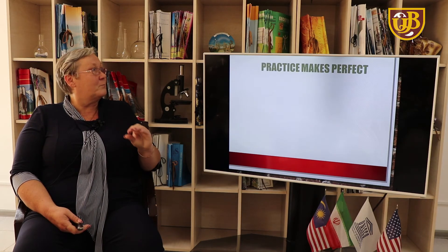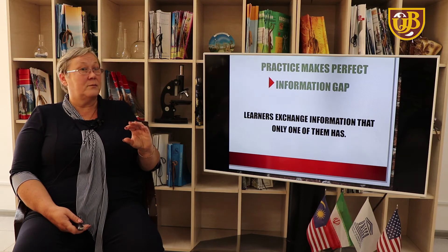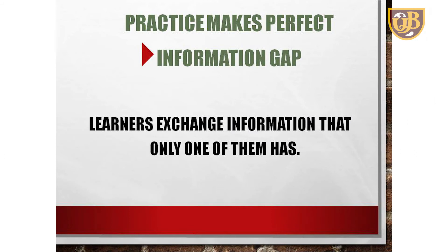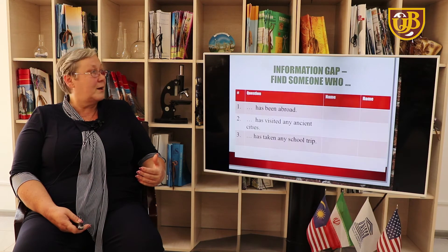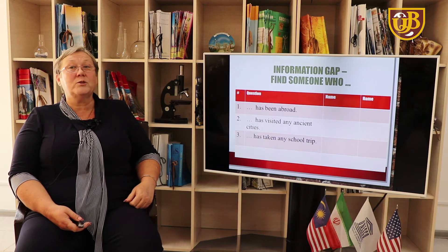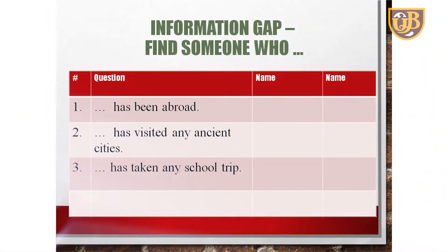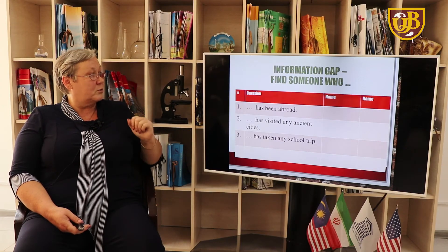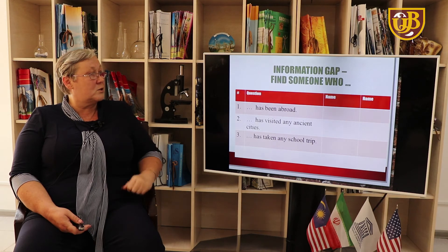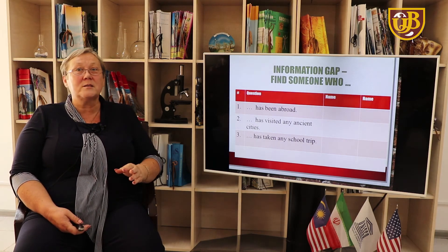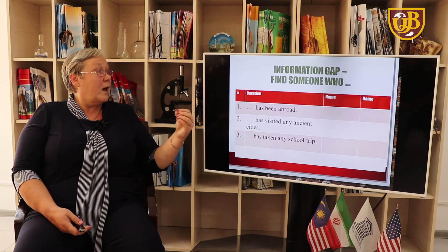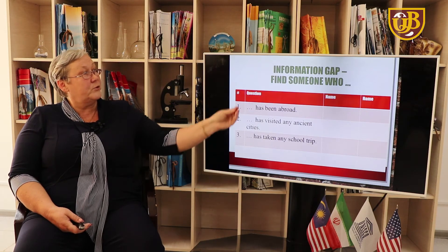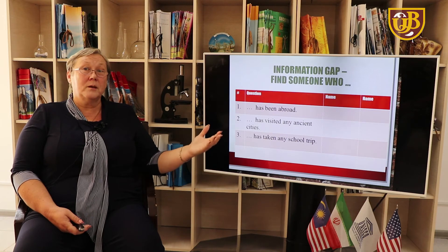Now let's discuss some of them. Practice makes perfect — to achieve goals and to have good results, you need to practice a lot. Information gap activity: learners exchange information that only one of them has. 'Find someone who' is a commonly used activity — you have a table with questions such as 'Who has been abroad?', 'Who has visited any Asian cities?', 'Who has taken any school trip?' The students mingle around the class to ask these questions and put the names of students who gave a positive answer.